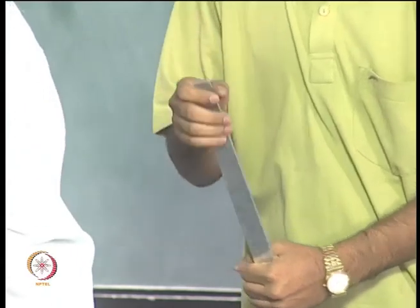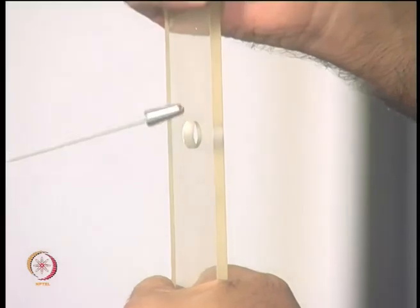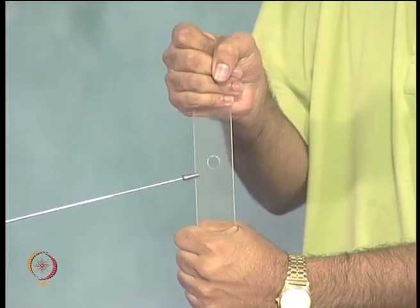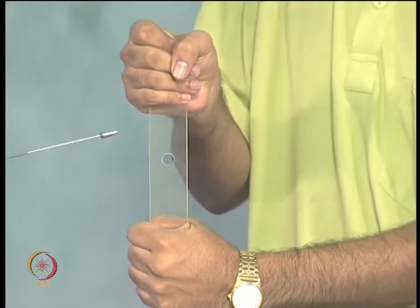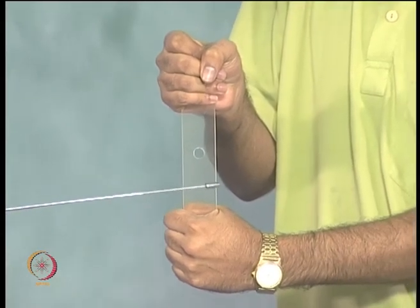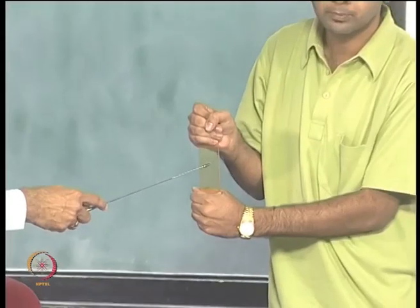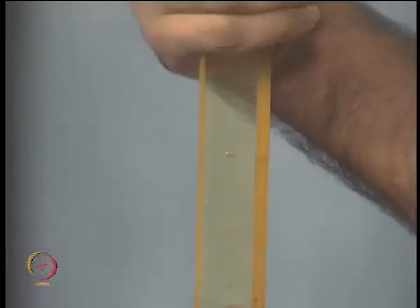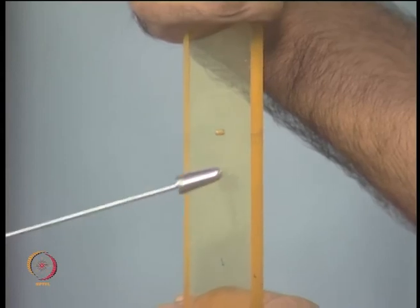For a problem of that nature you have a ready-made solution from strength of materials. But the moment you take the same plate and introduce a hole, it is just not possible to solve from strength of materials, because plane sections do not remain the same before and after loading. Can this at least be solved by theory of elasticity? That is also not possible if the size of the hole is comparable to the width of the specimen. However, if the hole size is very small, though physically this is a finite body, mathematically it could be considered as at infinite distance away, and you could invoke theory of elasticity to get a closed form expression.